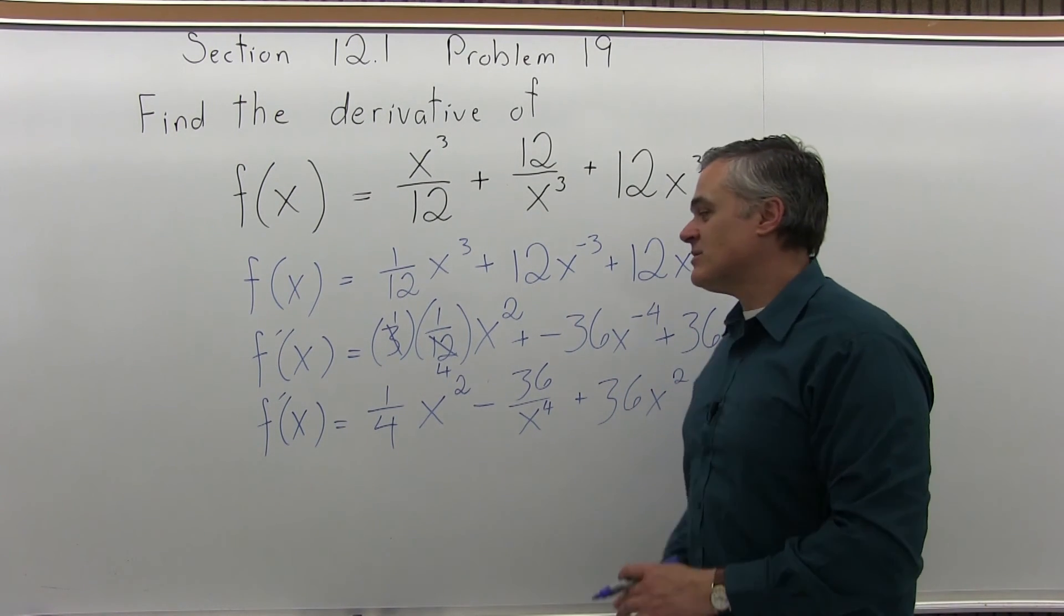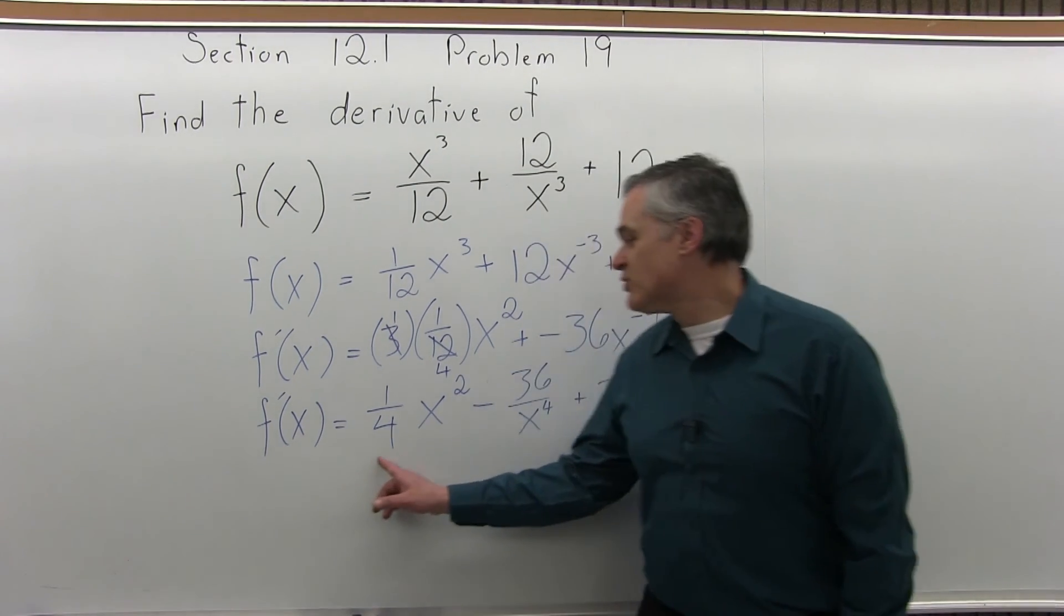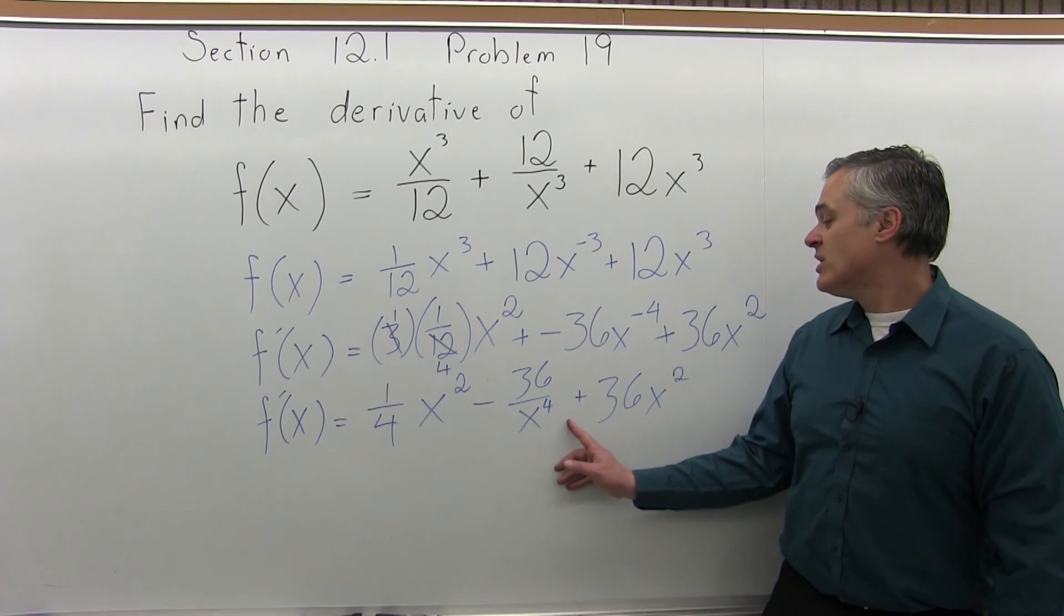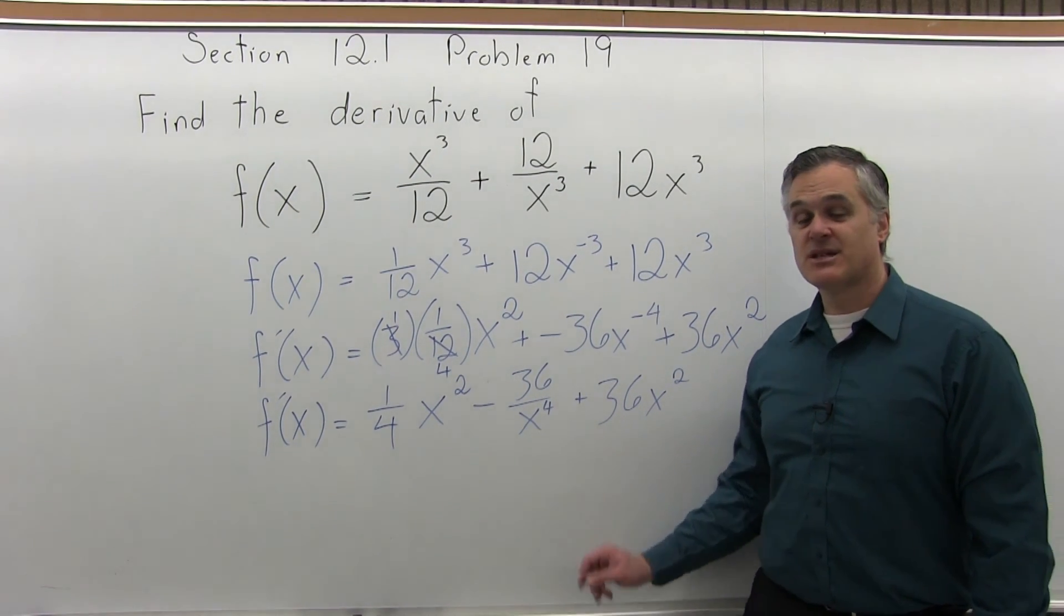So my final answer is f'(x) = (1/4)x² - 36/x⁴ + 36x².